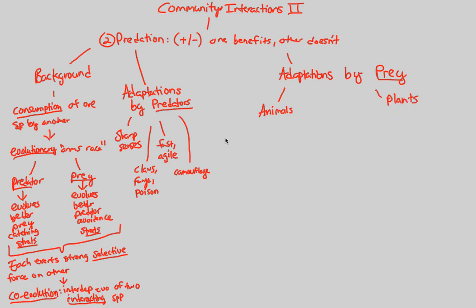Animals are evolving very nice ways to avoid — predator avoidance strategies. Animals can do things like mechanical defenses, so they have mechanical avoidance strategies.